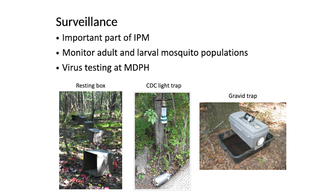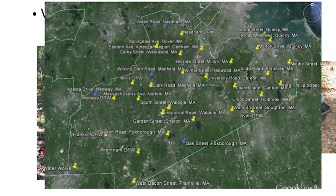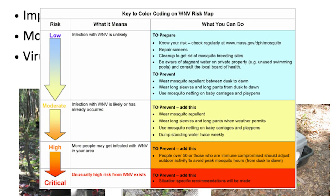Any species I'm concerned about we send to the state lab for testing, and that's where the virus testing and monitoring comes in. We have traps all over Norfolk County — at least two traps in every town. The state Department of Public Health will use the information we give them to make risk maps. In the summertime you can go on their website and see a risk map where your community is color-coded based on the risk of infection — blue for low risk, increasing to moderate, high, and critical based on how many mosquito pools we're finding that have virus in them or in nearby communities.